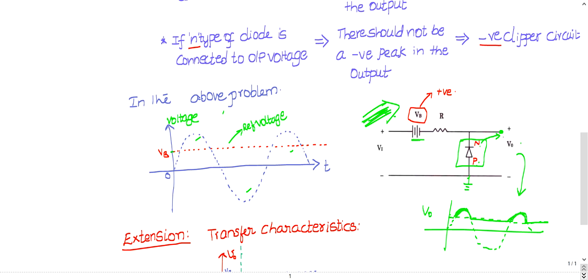Clip off the negative part because N-type is connected to the output. This is a shortcut technique — not a concept explanation. This is the output waveform. You can simply choose the answer. The negative part got clipped.